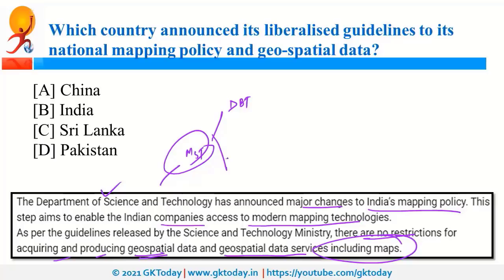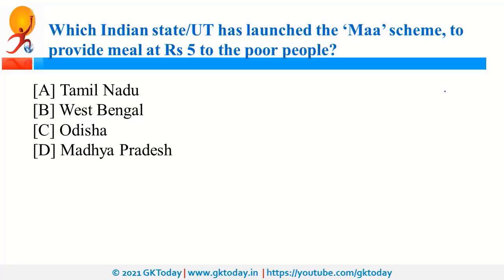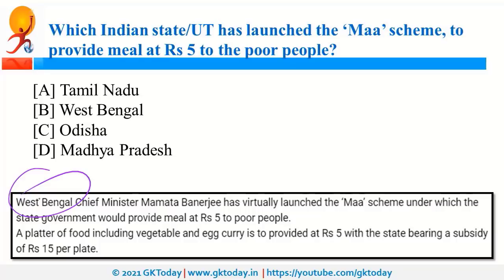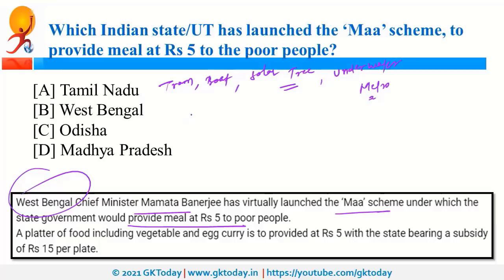West Bengal launched the MAH scheme to provide meals at 5 rupees to poor people, aimed at offering subsidised meals. Chief Minister is Mamata Banerjee. West Bengal was also in news for its first tram library, first boat library, the installation of the biggest solar tree, India's first underwater metro project, and the Sarkar Aapke Dwaar initiative.